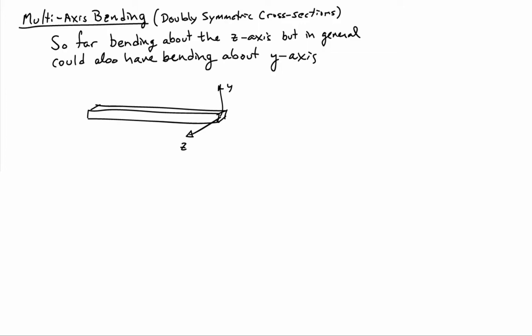Up to now, we've been dealing with the case of bending about the z-axis. What I'd like to briefly look at is what happens if you have bending about both the z and the y-axis for a beam. We'll go ahead and assume that the cross-section is doubly symmetric, which will simplify things. So let's consider the situation where we have loads that bend the beam about both the y-axis and the z-axis — transverse loads as shear forces in the z-direction, and moments about the y-axis, causing deflection in both directions.